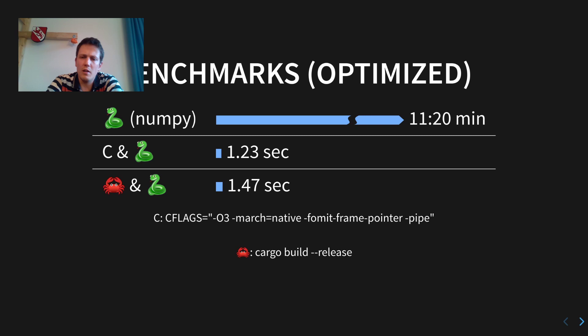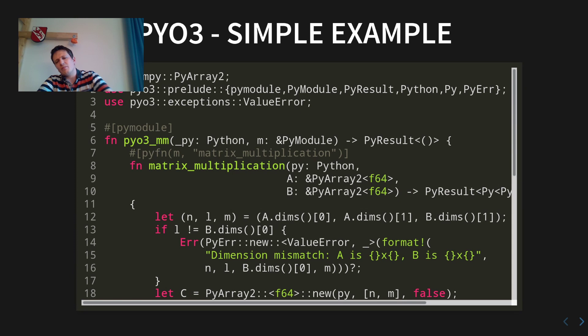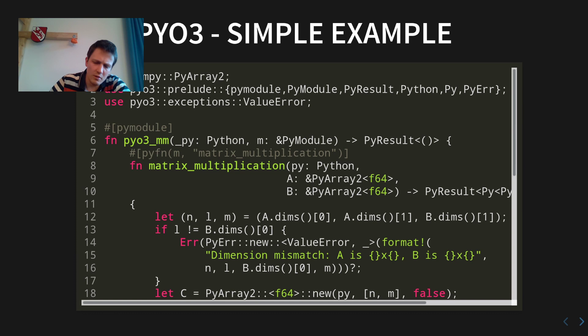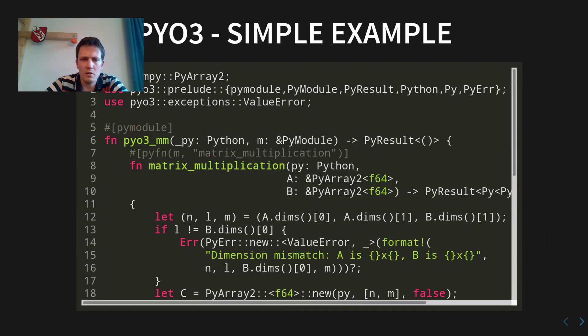My interpretation is that Rust is still a young programming language and not as well optimized as C yet. Let's see what happens going forward. That was my first part. Now I want to go into a little more detail on PyO3 — in the first part I talked about the numerics; here I want to talk about the interface between Python and Rust. What you can see here is a very simple small example where I simply do a matrix multiplication and use PyO3 to make it accessible from Python.